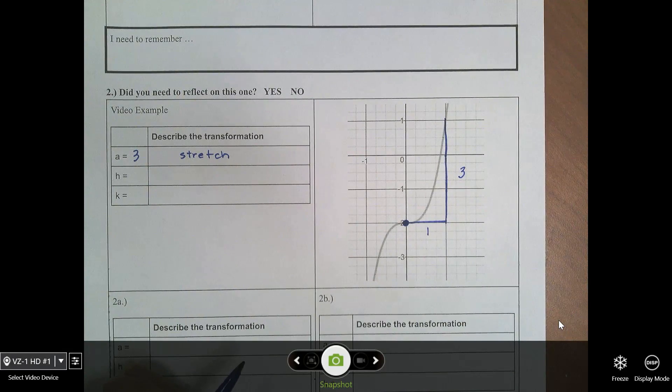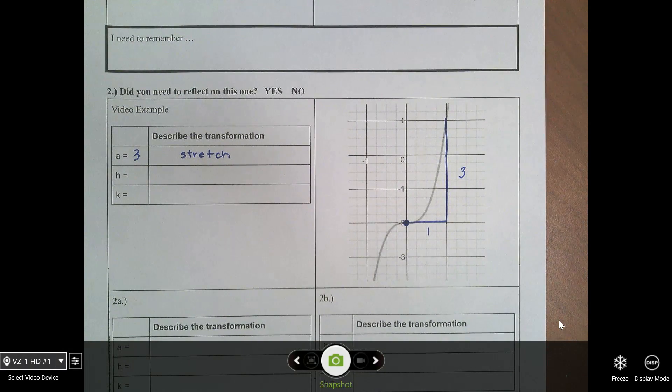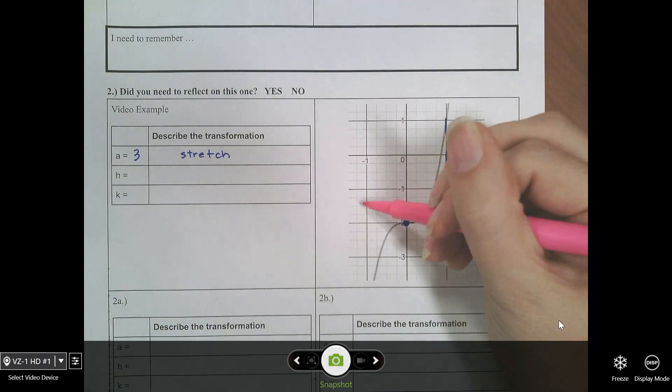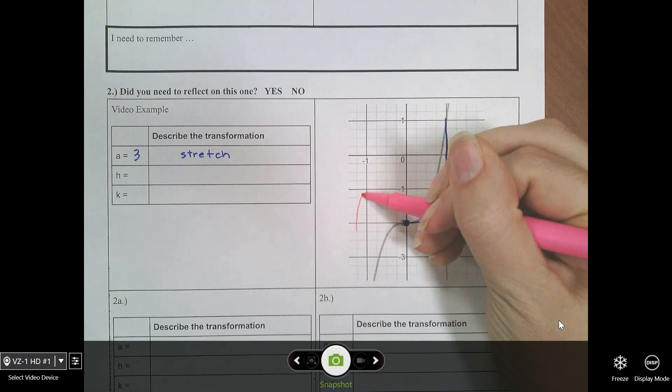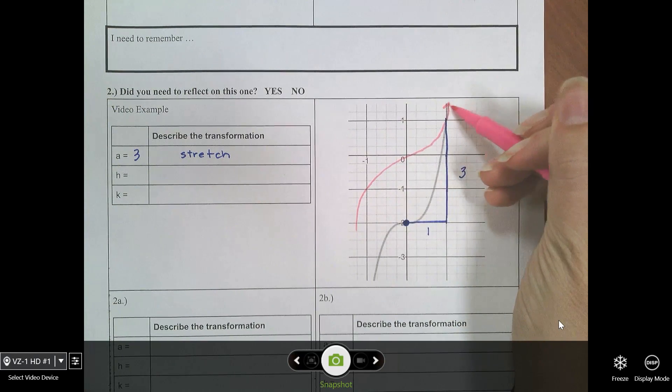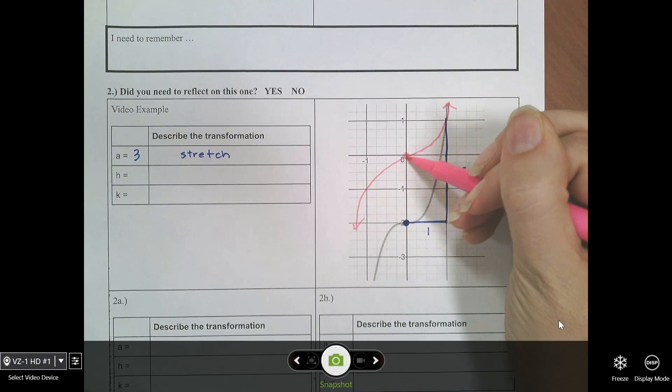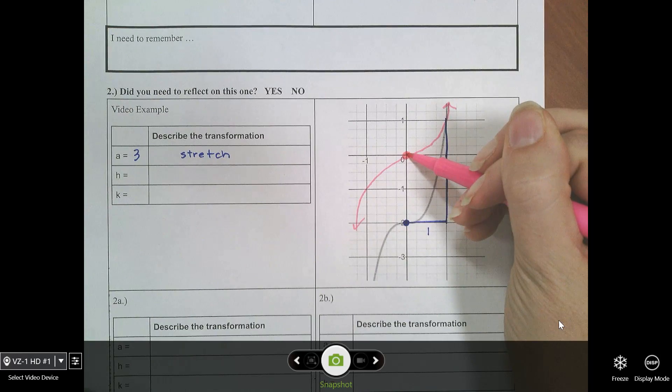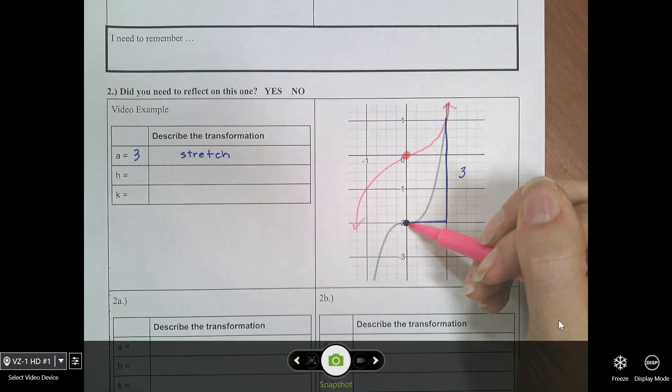Then we're going to figure out our h, k. This time, we are going to start from the origin. Because if you think about it, the original parent looks something like this. So, the starting point started here, and now it's all the way down here.